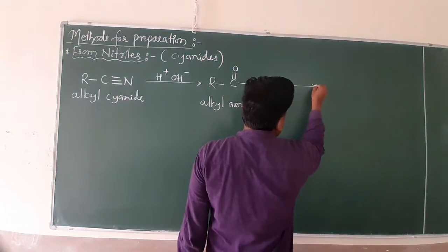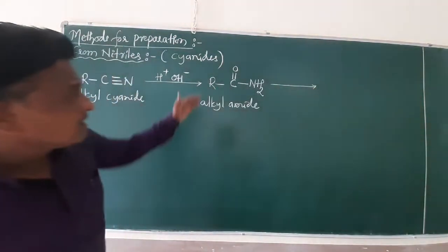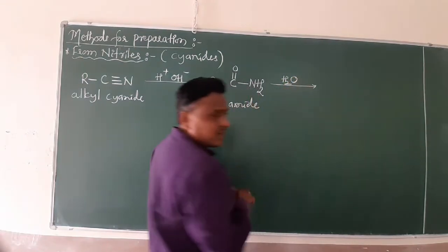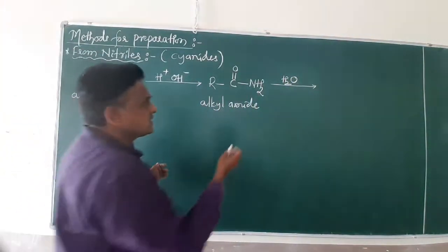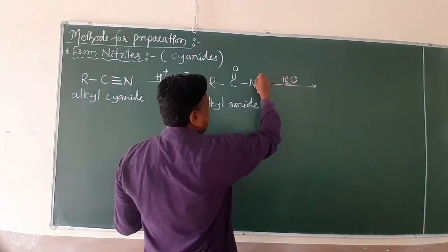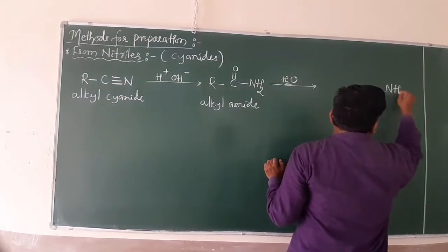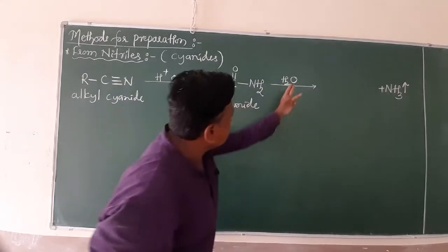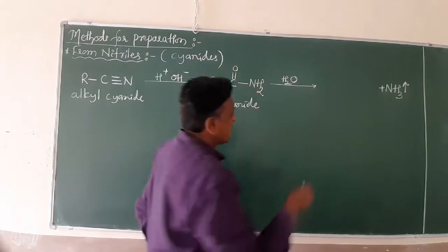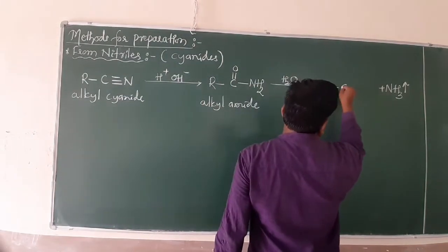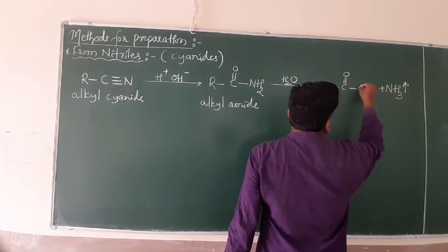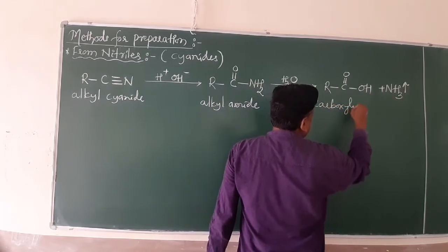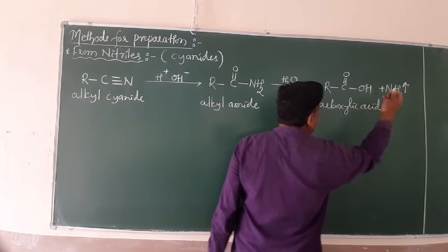And finally, once again it undergoes hydrolysis. This amide undergoes hydrolysis again with H⁺ and OH⁻. The NH₂ group combines with H to form ammonia. Ammonia is released. What remains is OH attached to the carbon — RC double bond O with OH. The name of this compound is carboxylic acid.